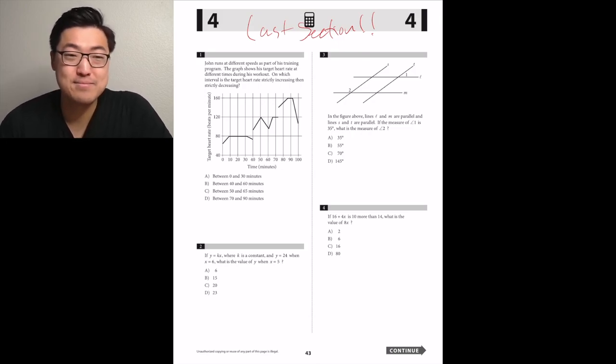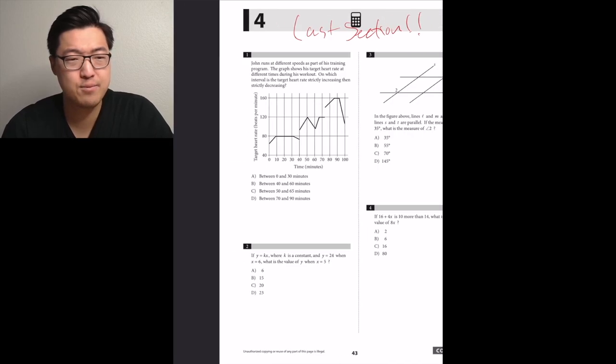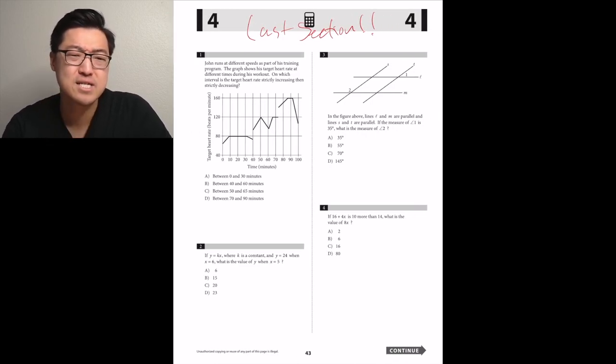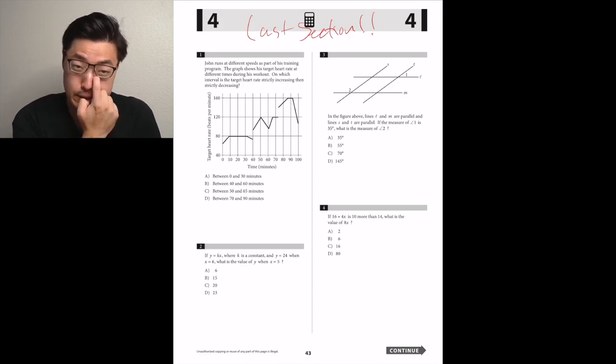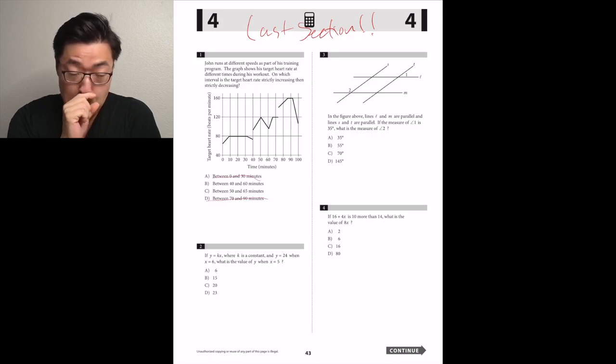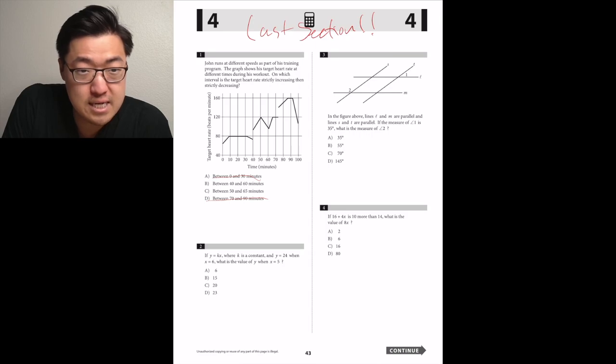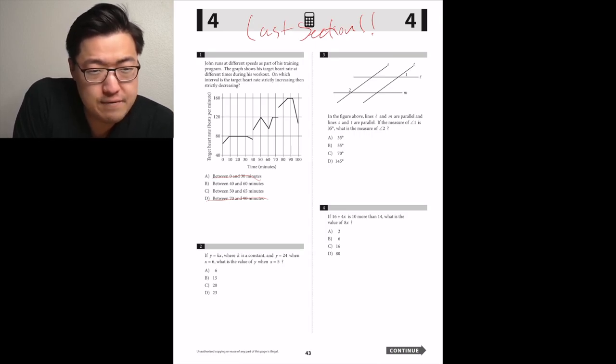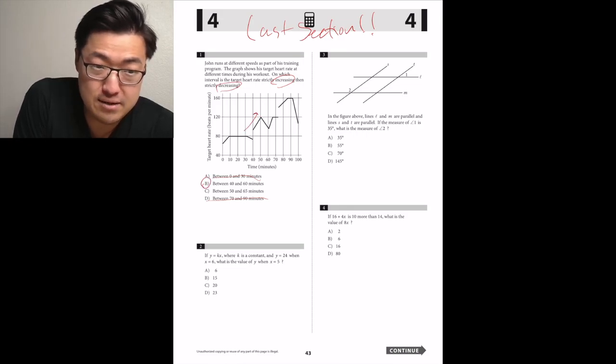Number one, John runs at different speeds as part of his training program. The graph shows his target heart rate at different times during his workout. On which interval is the target heart rate strictly increasing and strictly decreasing? None of the parts where it's flat. Not 10 to 30 or 70. Not maybe CB or C. 50 to 65, I think is where it flattens out. Strictly decreasing. I think it's B.